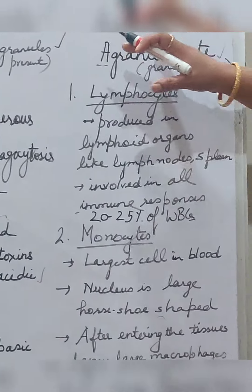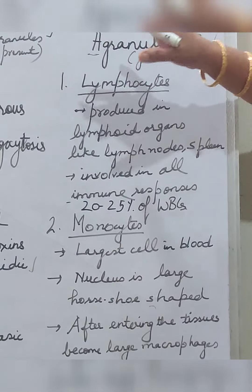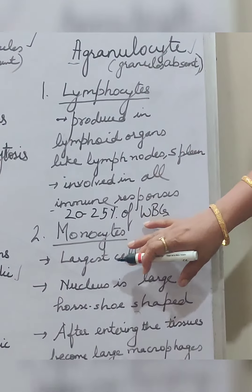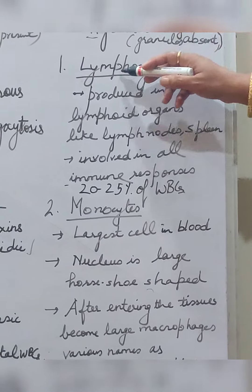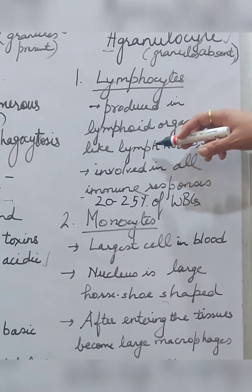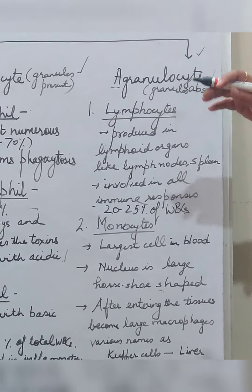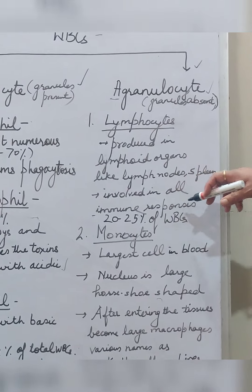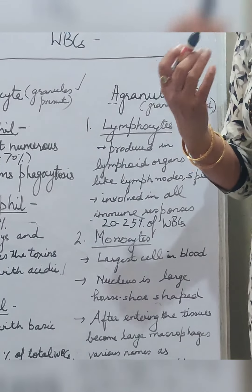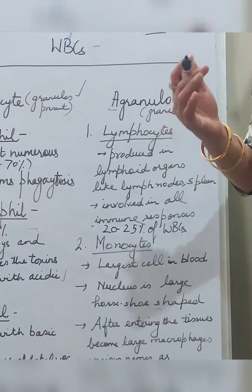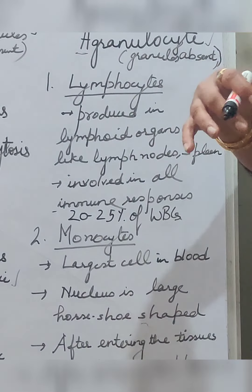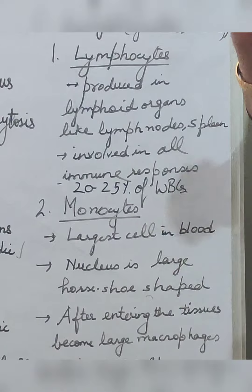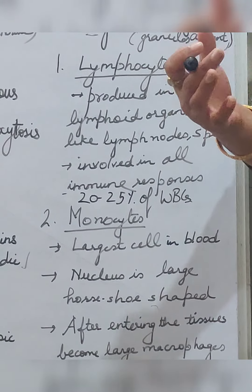Now, agranulocytes — as the name tells, there are no granules in their cytoplasm. These are lymphocytes and monocytes. Lymphocytes are formed in lymphoid organs in the body such as lymph nodes and spleen. They are responsible for all immune responses in the body. Immune response is our body's defense system — any infection that enters the body from outside triggers the body to react against it, which we call the immune response.